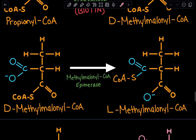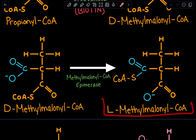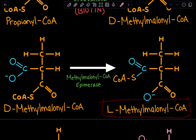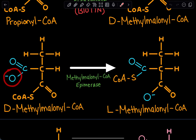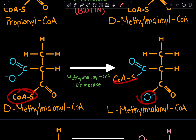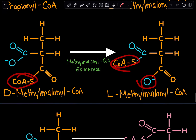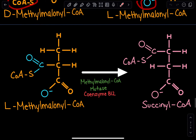In the next step we use an epimerase, which performs an isomerization reaction in which we convert D-methylmalonyl-CoA into L-methylmalonyl-CoA. We can note that this was just a switch between the oxygen and the coenzyme A groups, giving us L-methylmalonyl-CoA.